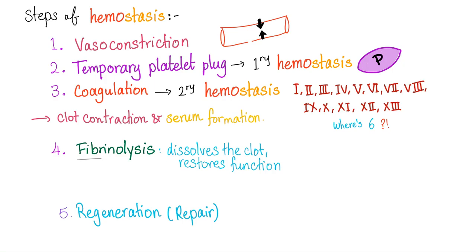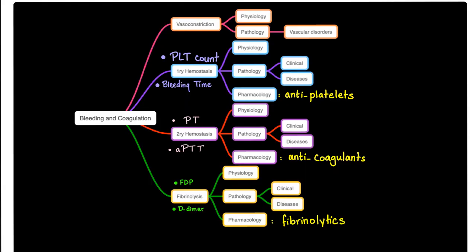Steps of hemostasis include vasoconstriction, then temporary platelet plug — we call this primary hemostasis — and then coagulation — we call this secondary hemostasis. In primary hemostasis, the hero is platelets; in secondary hemostasis, the heroes are the coagulation factors. After that, you have fibrinolysis, then regeneration and repair.